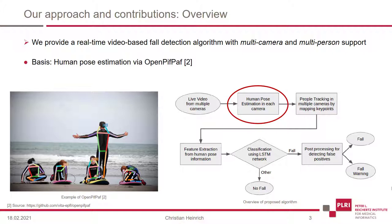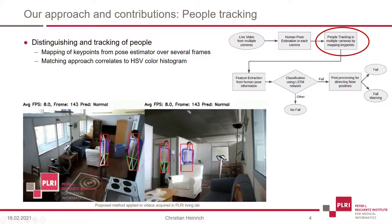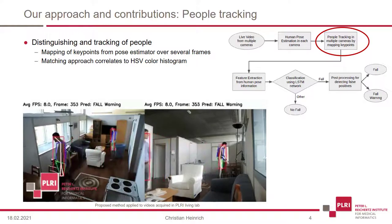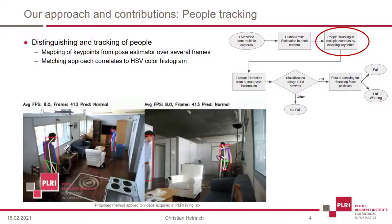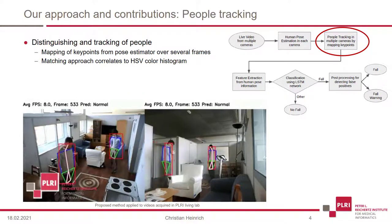The human pose estimation is the first step while analyzing videos from multiple cameras frame after frame. At its end, we achieve a list of key point sets for each camera for the next stage. The next step is to track different people in multiple cameras, which can be seen in the video example below. Each key point set of the list we achieve from the human pose estimation corresponds to a different person. If there is more than one person in one frame, we cannot differentiate which key point set corresponds to which person.